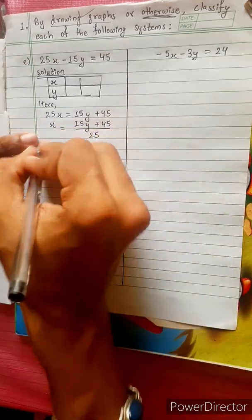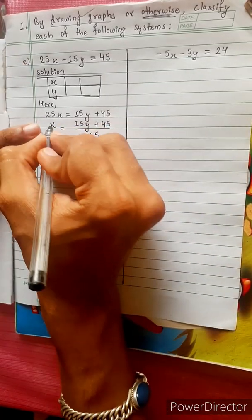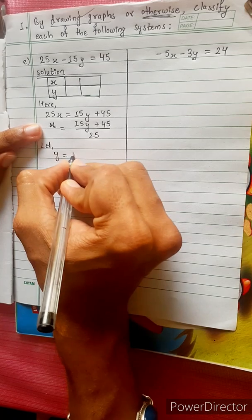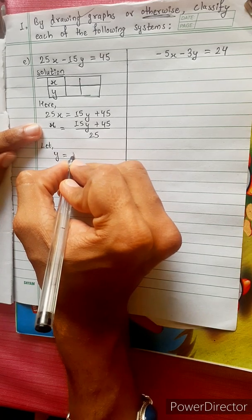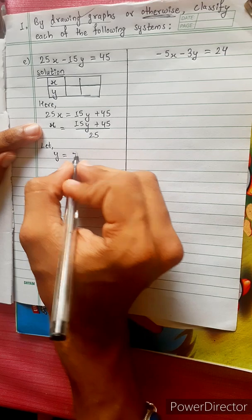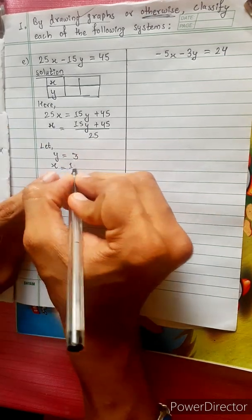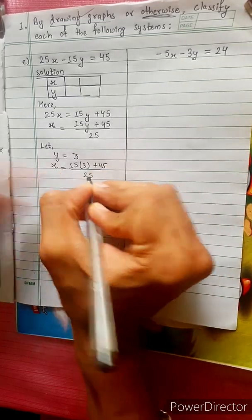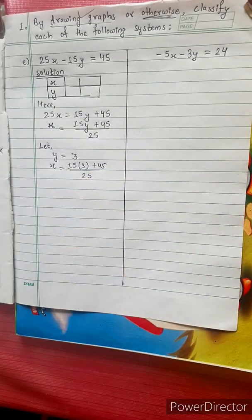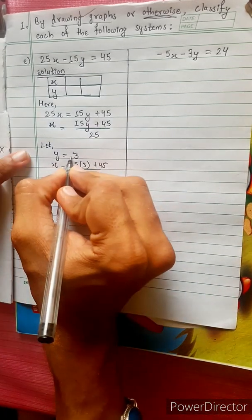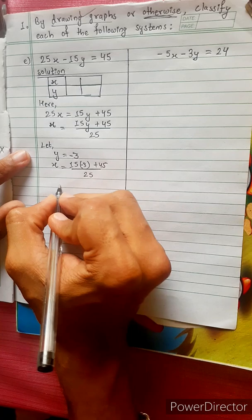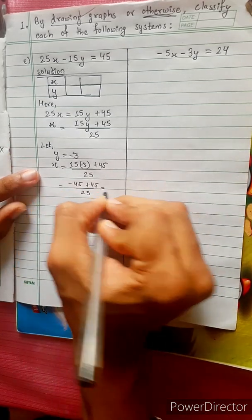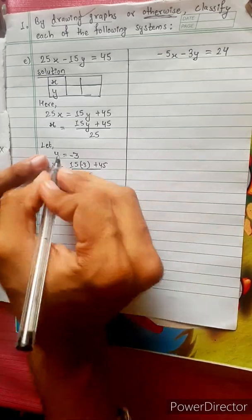Divide by 25. Using y equals 3, x equals 15 times 3 plus 45, divided by 25. That gives 45 plus 45, which is 90 divided by 25. Then 45 minus 45 plus 45 divided by 25 equals 0, so y equals 0 and x equals 0.